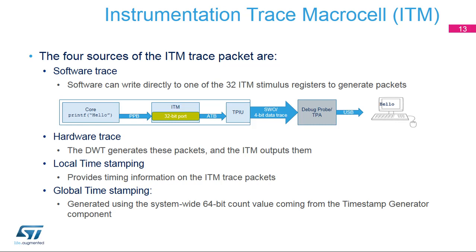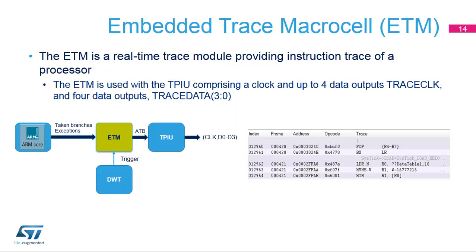To read or write a core register such as R0, the debugger has to halt the core. The DWT contains statistics counters that facilitate system profiling for the processor. For instance, a counter accumulates the number of clocks during which the microcode in charge of exception taking and exiting is active.